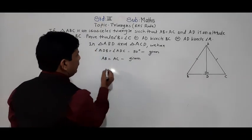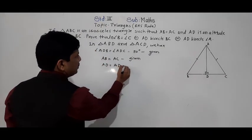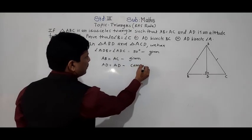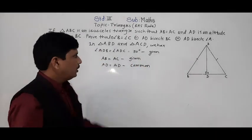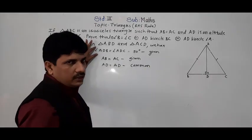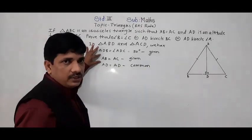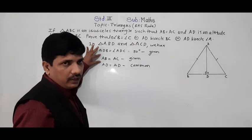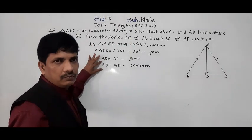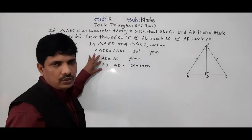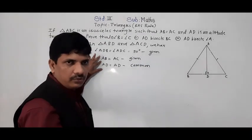The third thing: AD is equal to AD, because AD is the common side for both triangles. So both angles are 90 degrees, the hypotenuses of the respective triangles are equal, and one side is common. That is enough information to show by RHS criterion that both triangles are congruent.